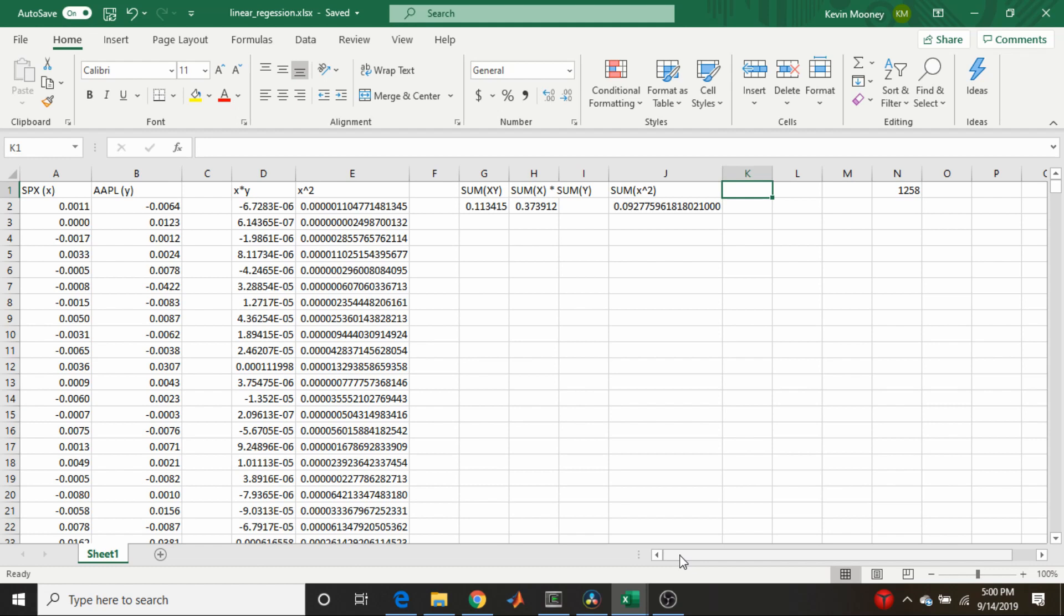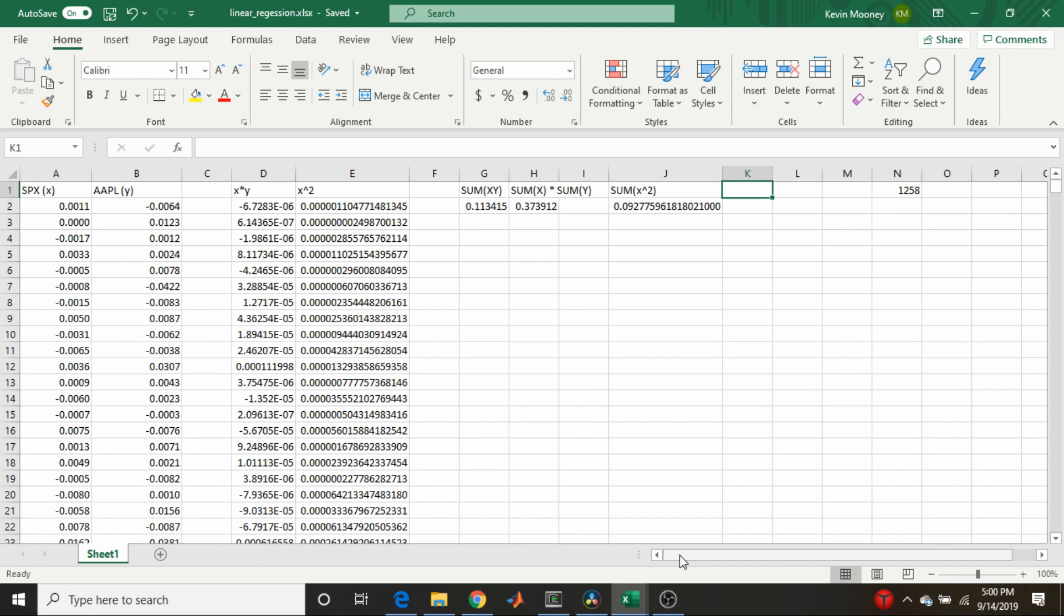And the last thing we're going to need is the sum of the x values. And we're going to need to square all that. So this is going to be equal to the summation of a2 to a1259. And now we need to just square that whole thing.